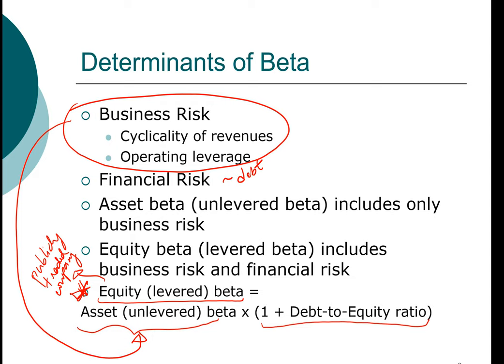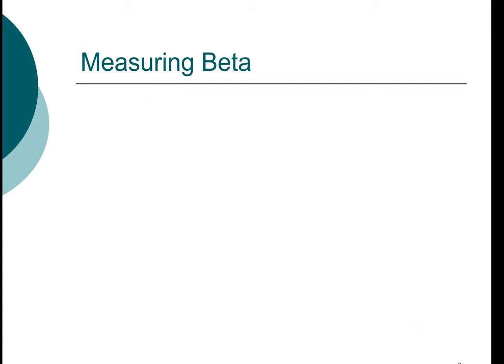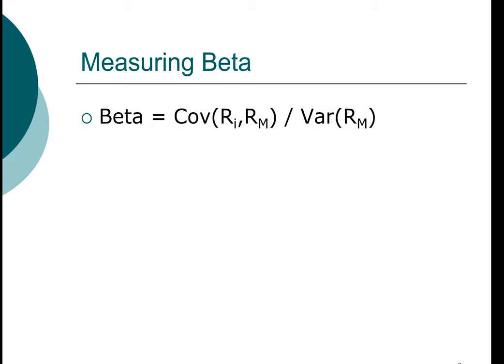As a reminder on how we compute equity beta — a publicly traded stock's beta is defined as the covariance between the stock and the market divided by the variance of the market. This is a standardized measure. The beta of the market is always equal to one, which this equation confirms: the covariance of the market with itself is just the variance of the market, and variance divided by variance equals one.